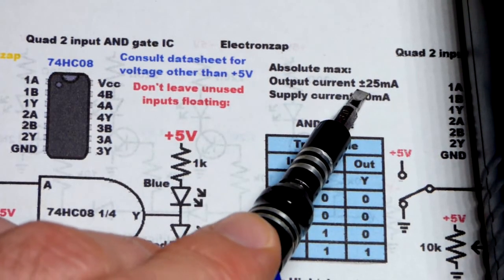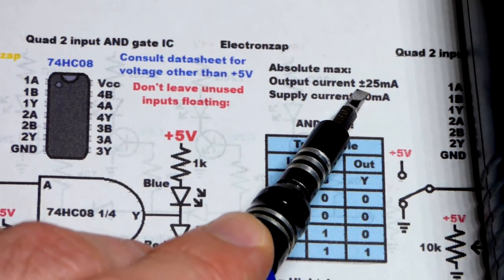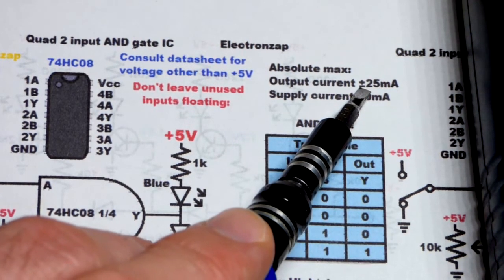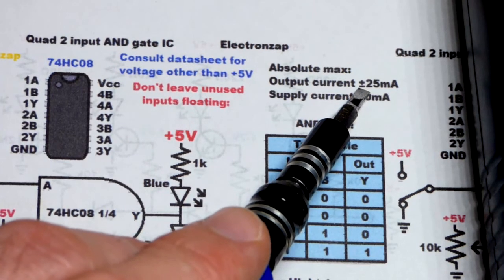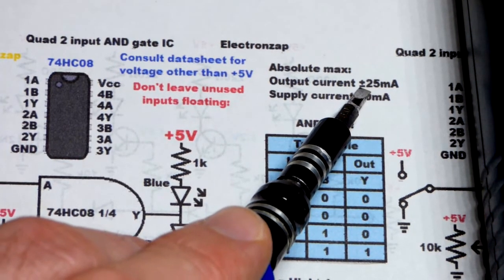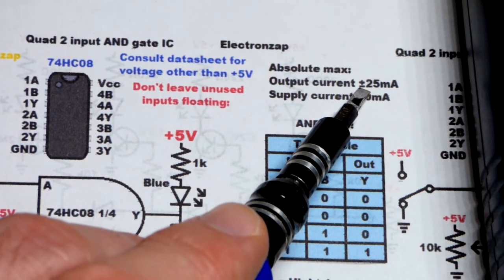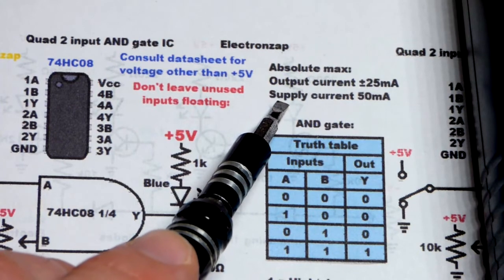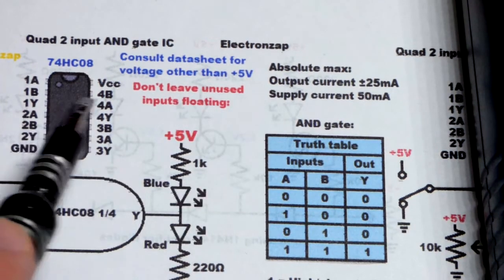So the output of each one of these can go up to plus 25 milliamps when it is the source of current, or negative 25 milliamps when it is sinking current. We saw that before. When the red LED was lit up it was sourcing current. When the blue LED was lit up it was sinking current.